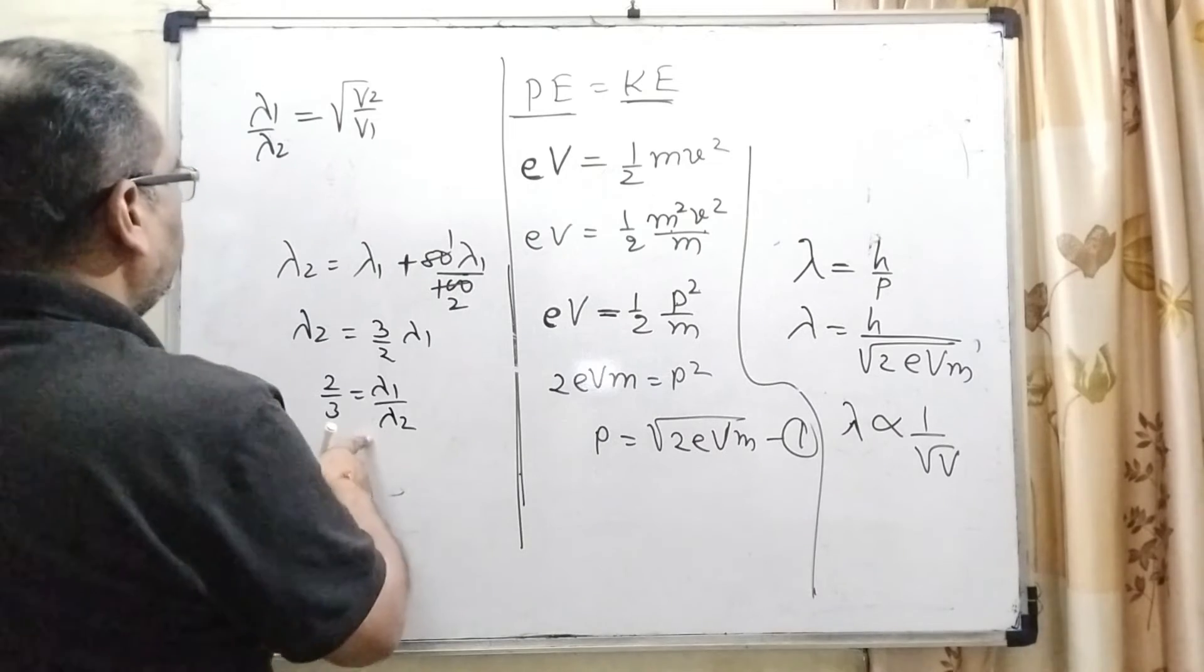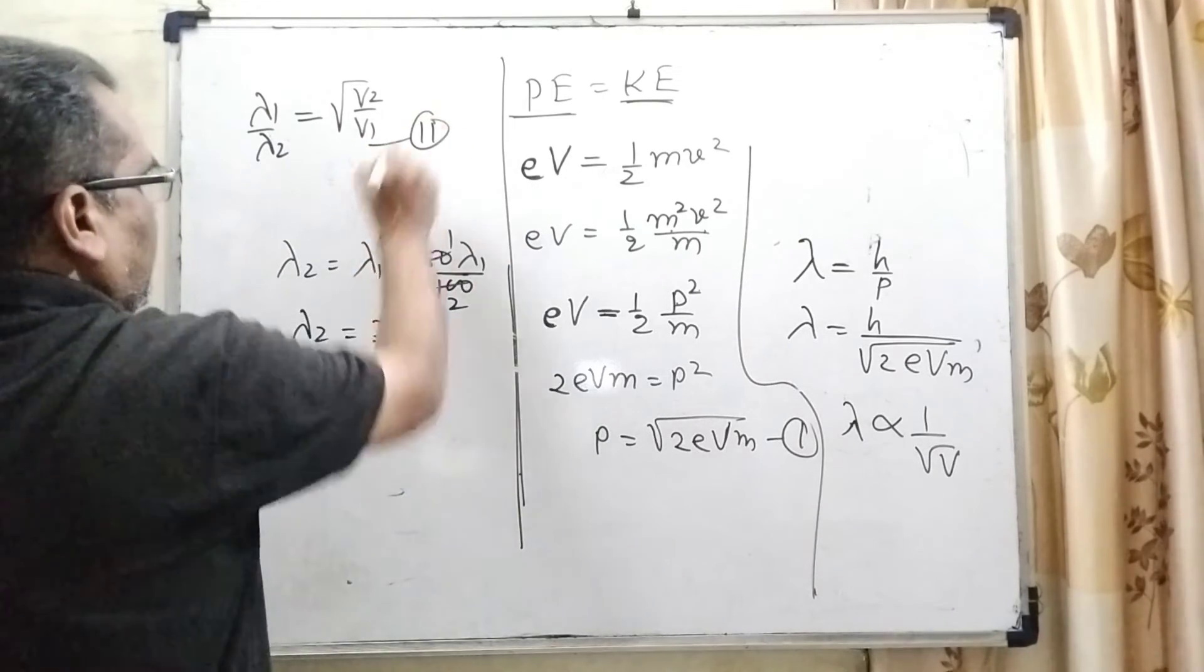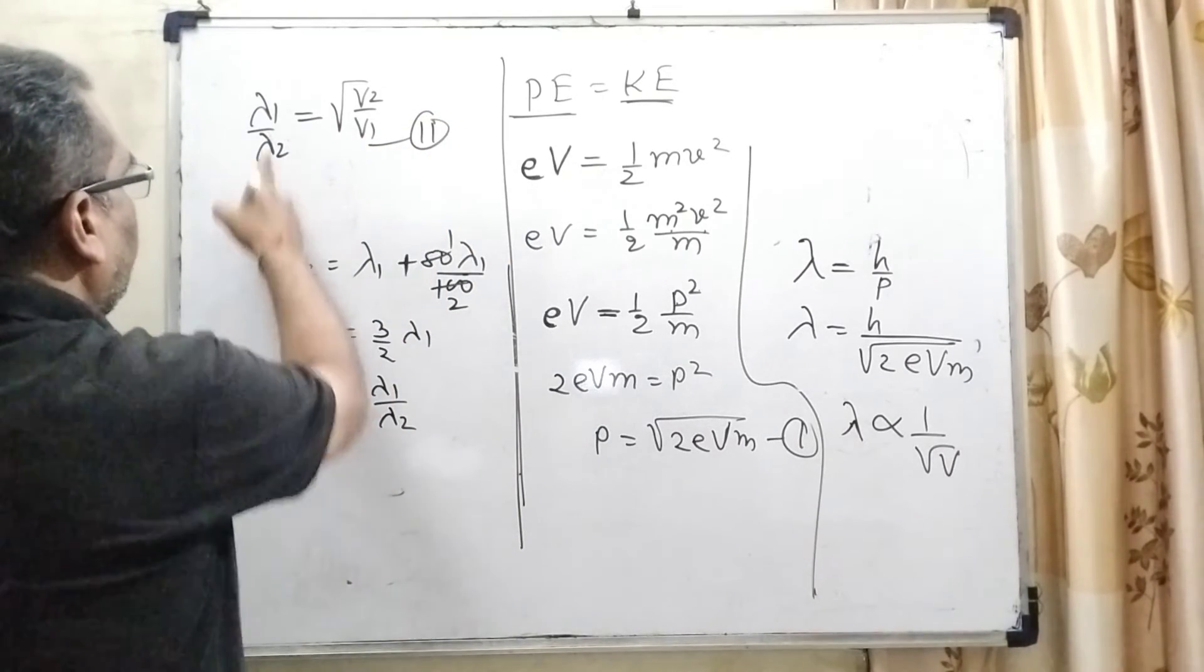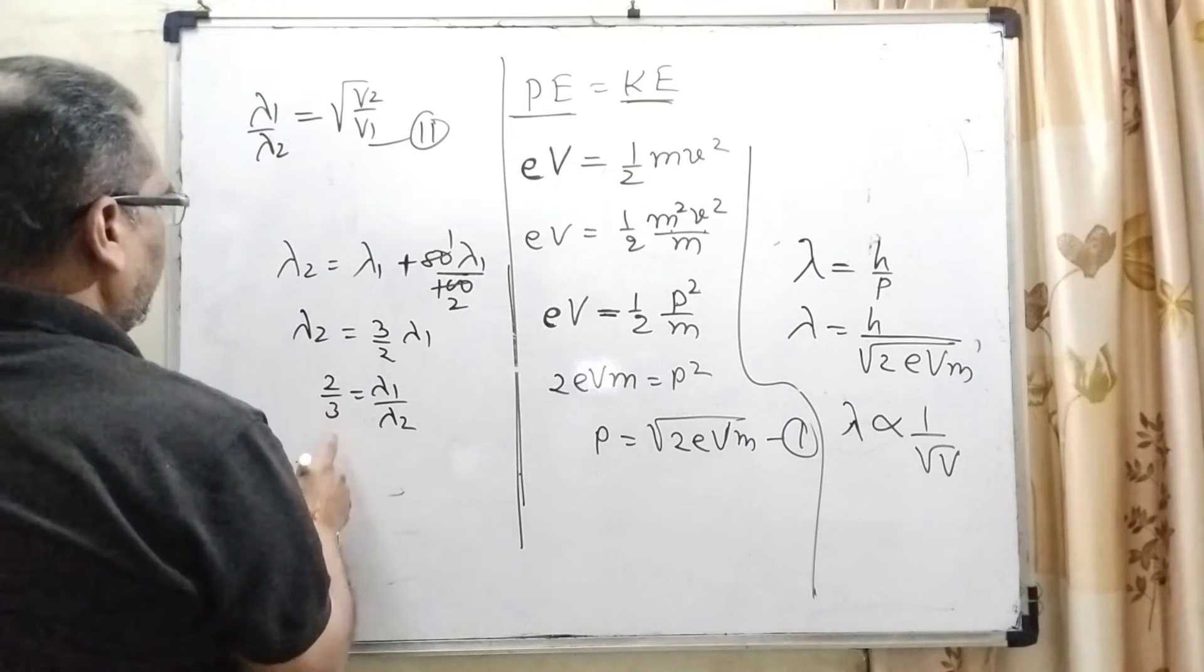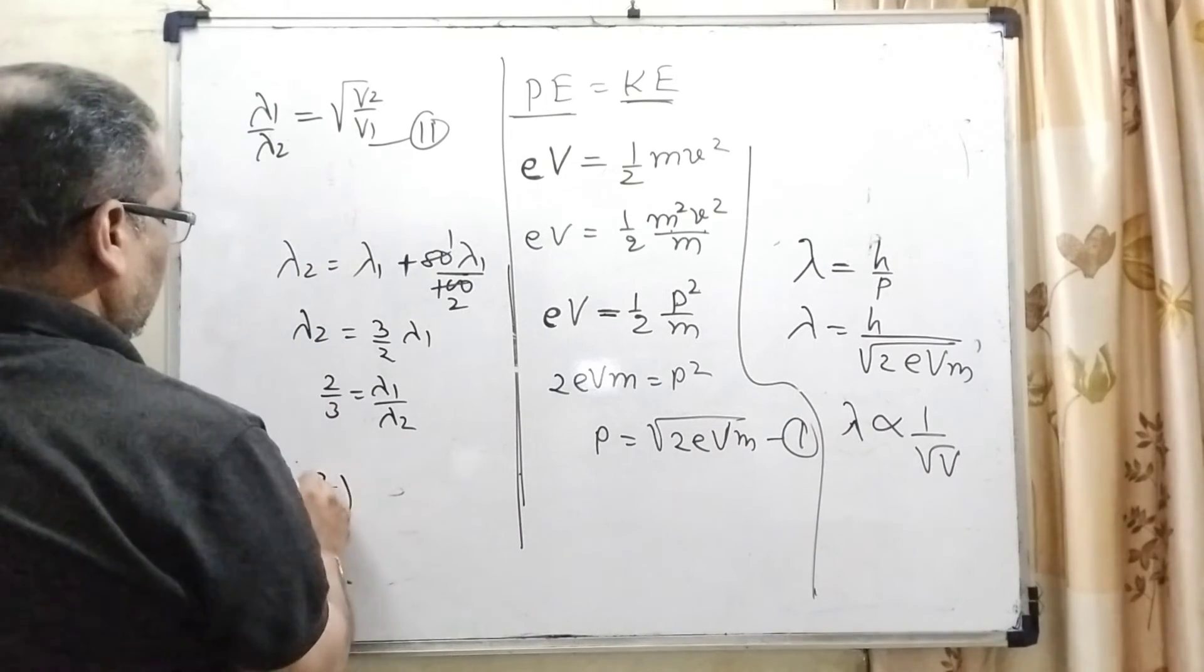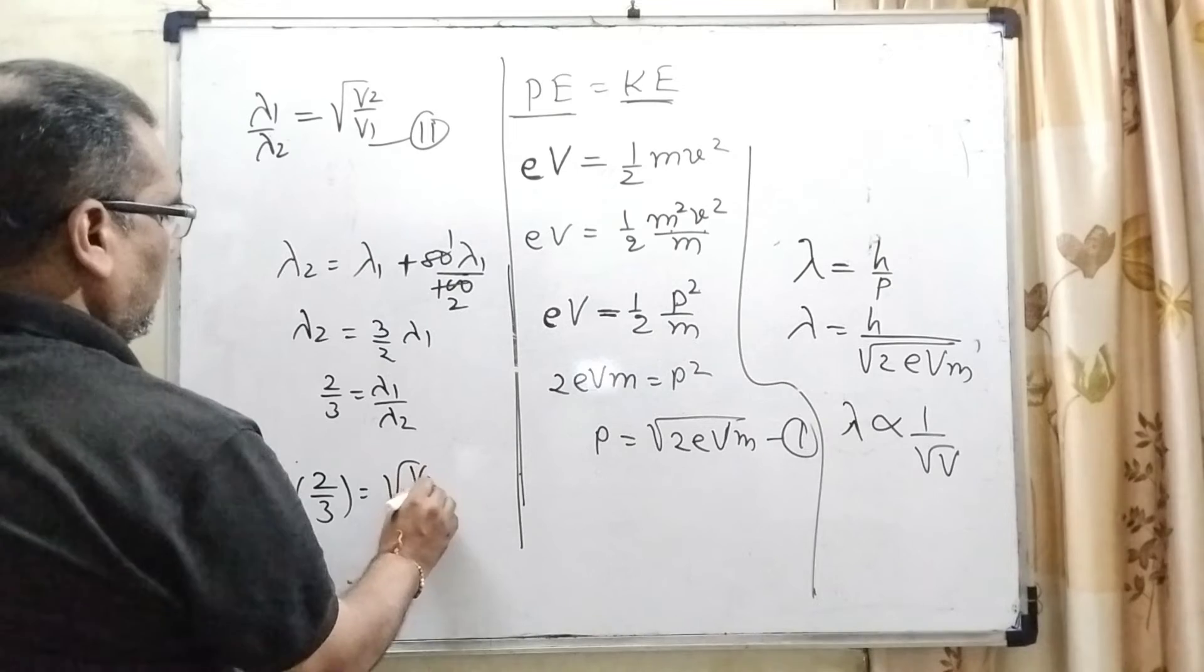Now substitute this value into equation 2. In place of λ₁/λ₂, we can write 2/3 = √(V₂/V₁).